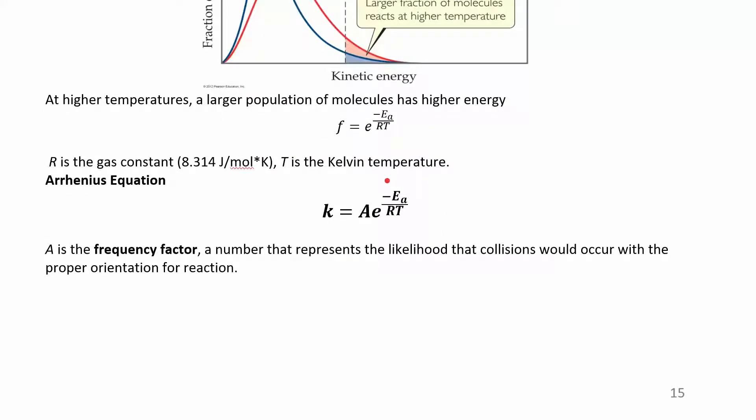Don't be scared by this. This is the Arrhenius equation. This is your rate constant k equals A times e to the negative Ea over RT. Ea is activation energy, R is the gas constant, and T is temperature. So basically it's saying the rate constant is related to your activation energy as well as the temperature.